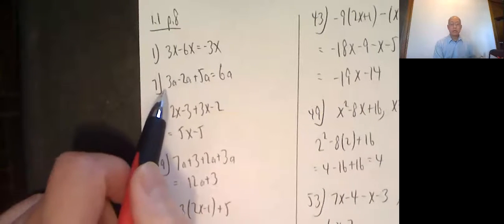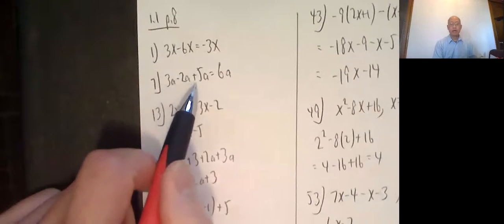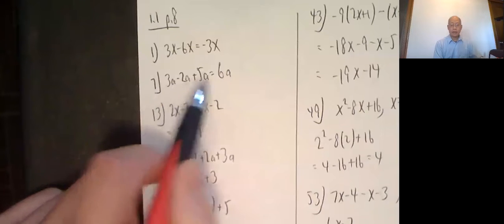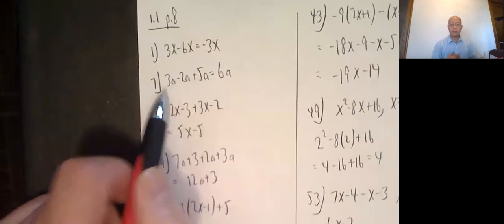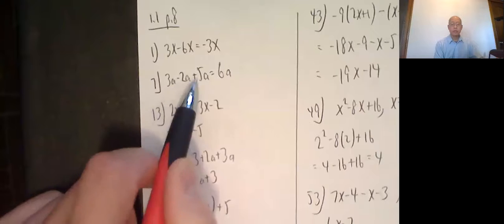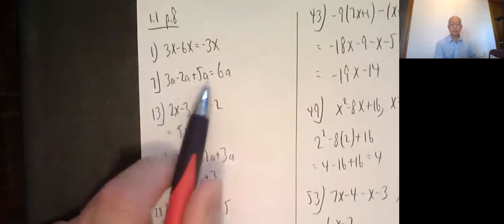So 3x minus 6x is negative 3x. Same thing for 7.1, 3a minus 2a plus 5a. They're all a's, so I can just combine the numbers that are in front, the coefficients. 3 minus 2 is 1, 1 plus 5 is 6. So the answer is 6a.